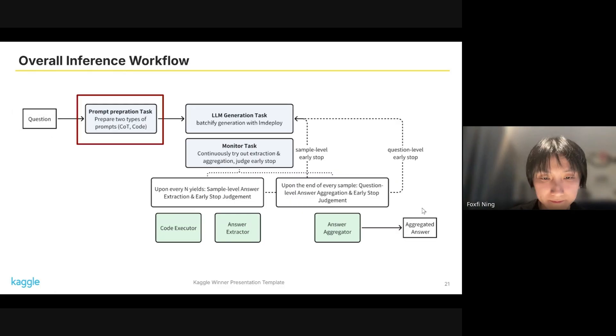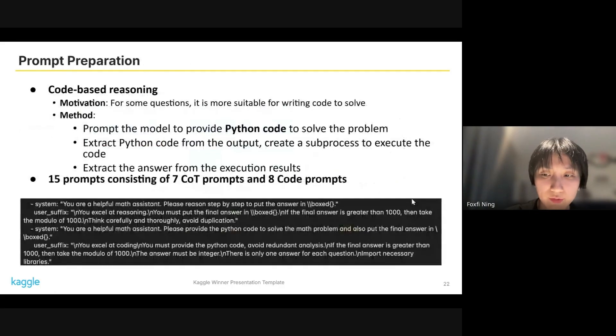Let us go into the prompt preparation task. Initially, we used 15 prompts consisting of seven COT prompts and eight code prompts. For the code prompts, we use the widely used code-based reasoning. The workflow is that we prompt the model to provide Python code to solve the problem, and we extract Python code from the output, create a subprocess to execute the code, and extract the answer from the execution results.